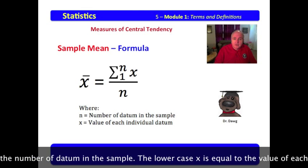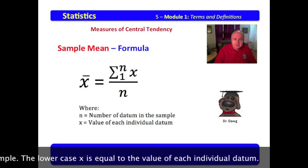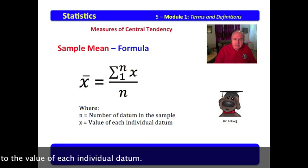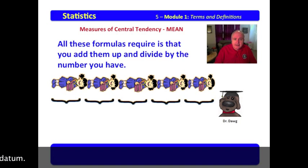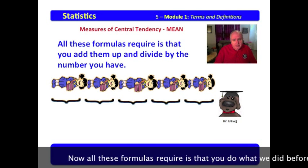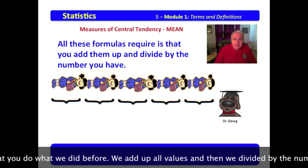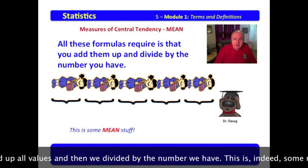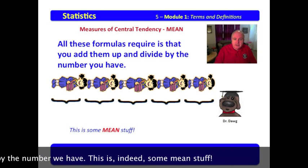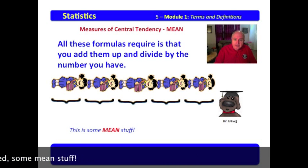Lowercase n is equal to the number of datum in the sample. Lowercase x is equal to the value of each individual datum. Now, all these formulas require is that you do what we did before. We add up all the values, and then we divide them by the number we have. This is indeed some mean stuff.